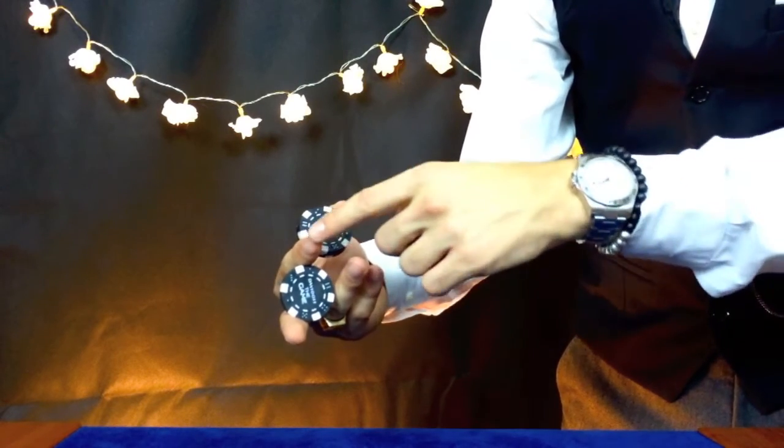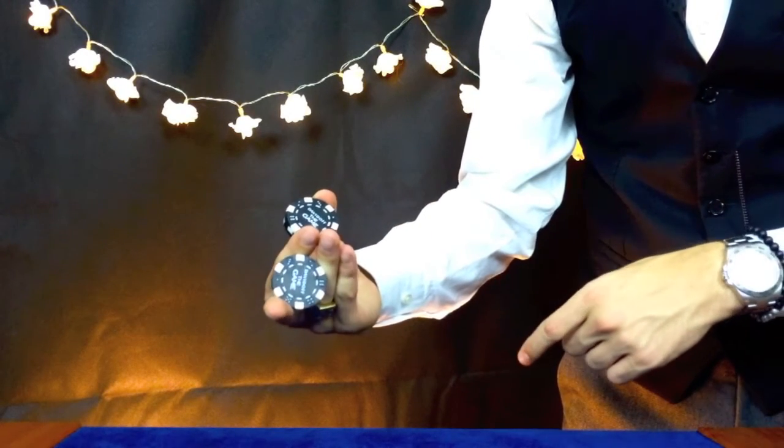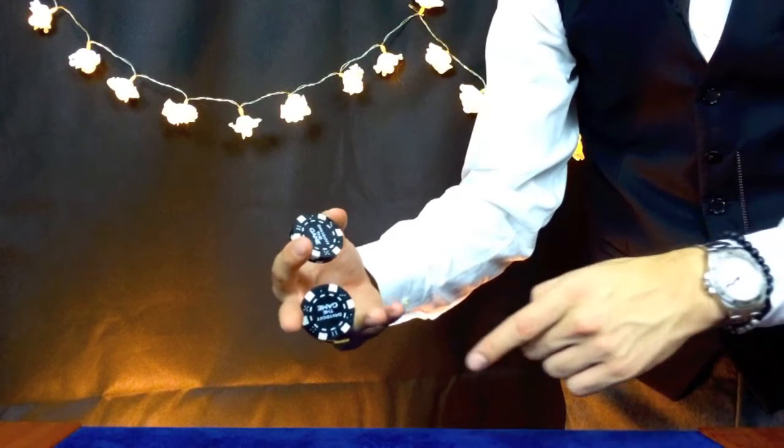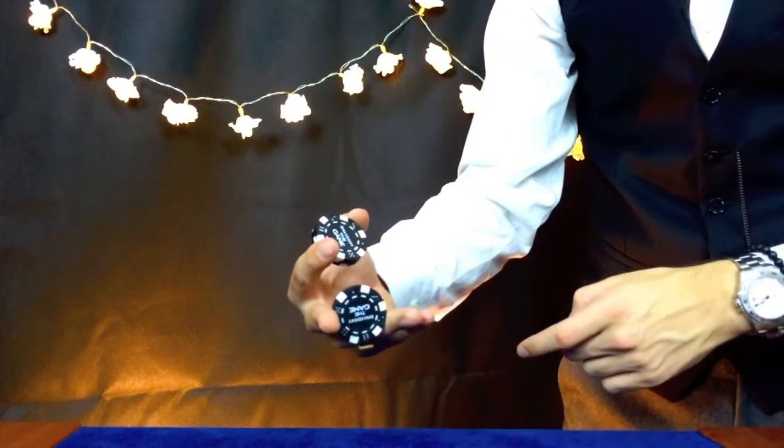Your ring finger is now going to come meet your index finger and then take that chip away. So now the chip is in between your ring finger and your middle finger.